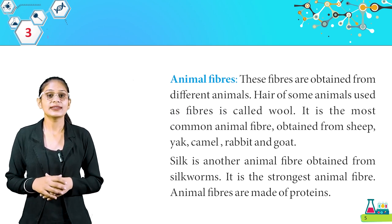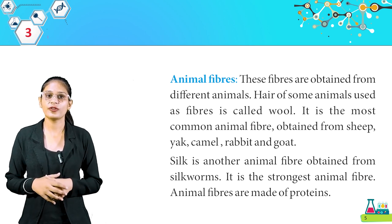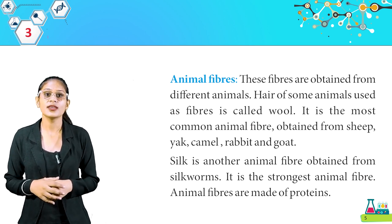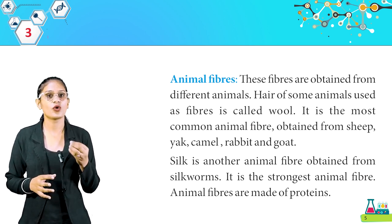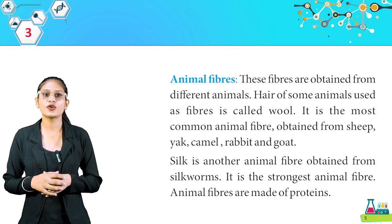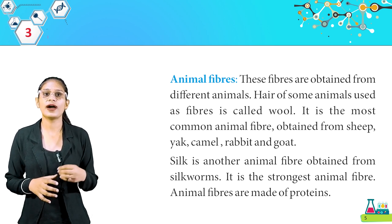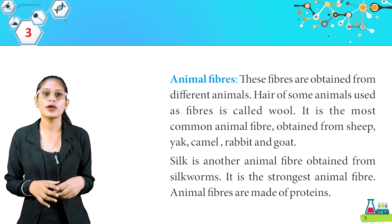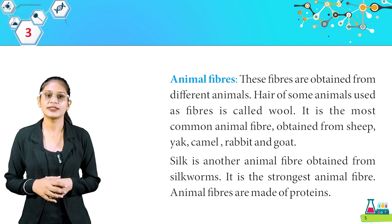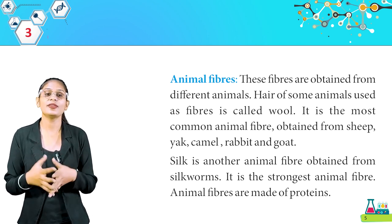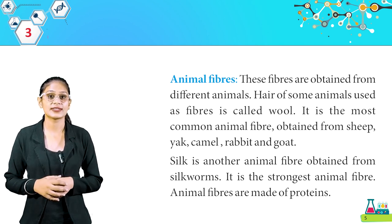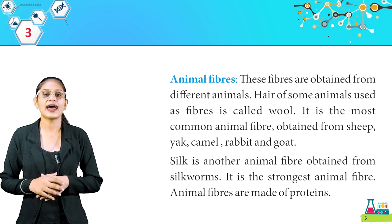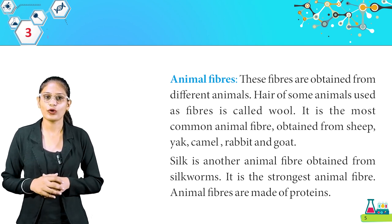Animal fibers are obtained from different animals. Wool is the most common animal fiber, obtained from sheep, yak, camel, rabbit, and goat. Silk is another animal fiber obtained from silkworms. It is the strongest animal fiber. Animal fibers are made of proteins.